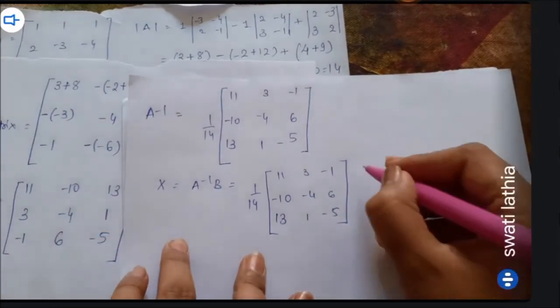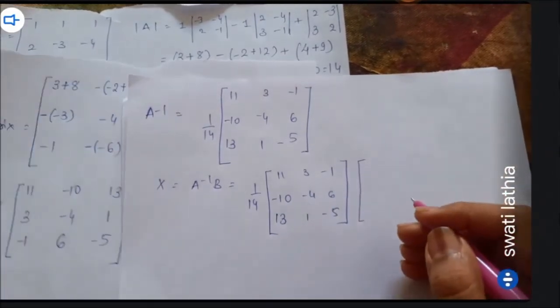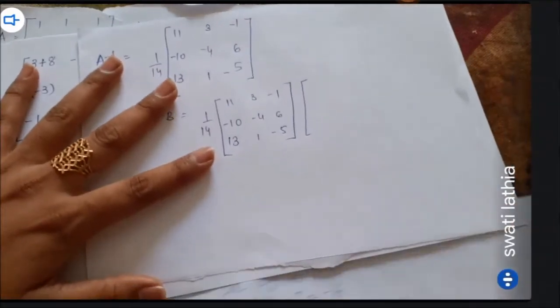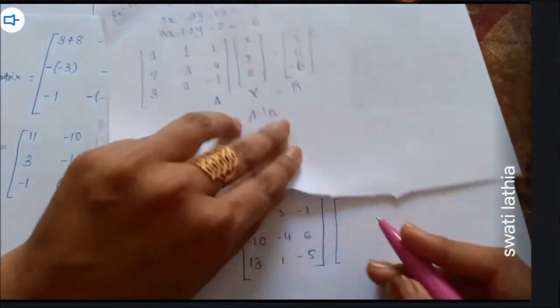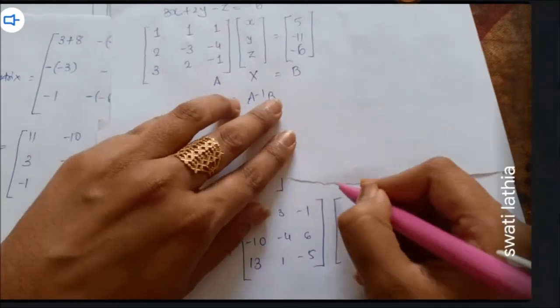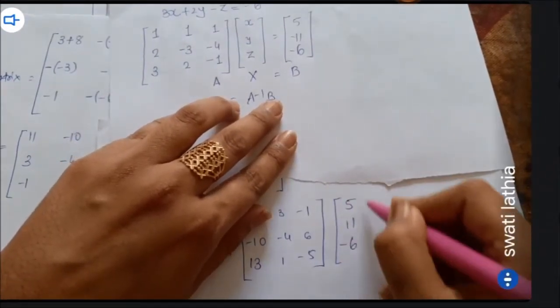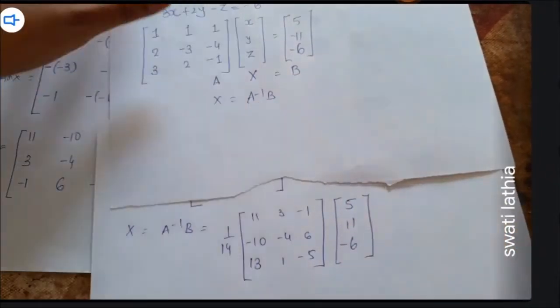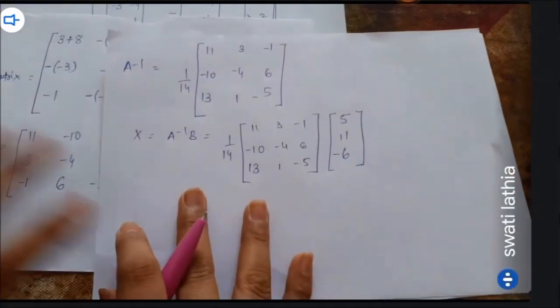We need to multiply by B. We already have B. Looking above, B is equal to [5, 11, -6]. That is our B matrix. Now we perform scalar multiplication with 1/14.